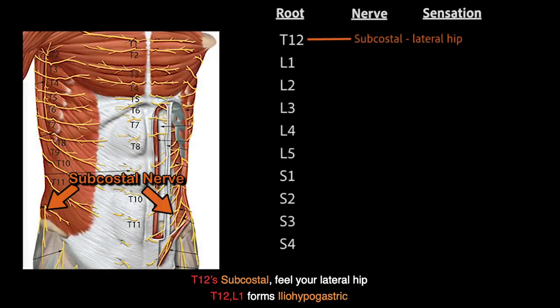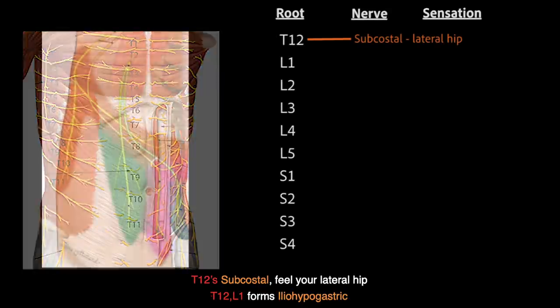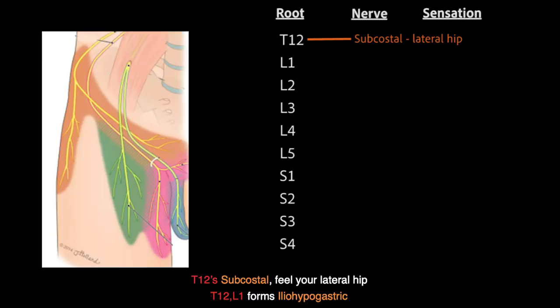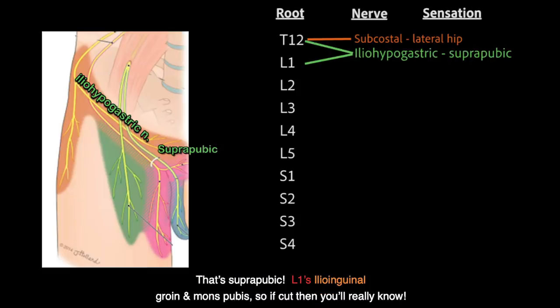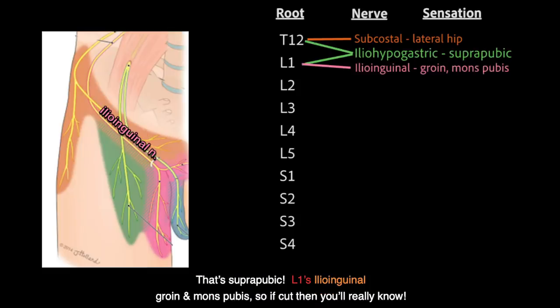T12 so costal, feel your lateral hip. T12-L1 forms iliohypogastric — that's suprapubic. L1's ilioinguinal: groin and mons pubis.